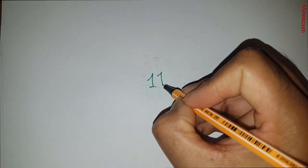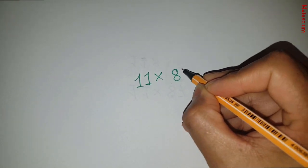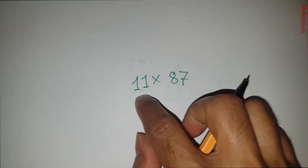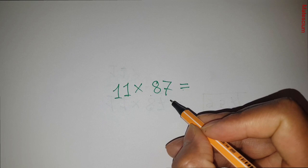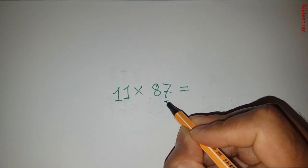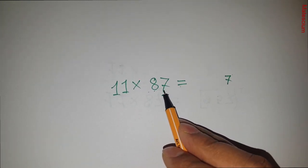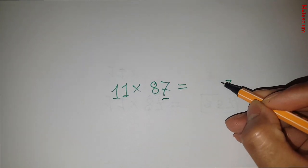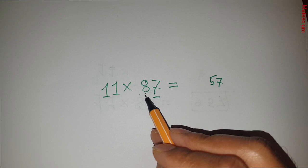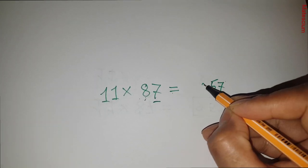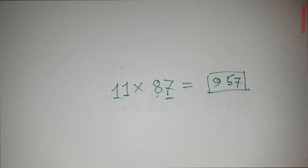Bonus: did you know you can multiply any number by 11 within 5 to 10 seconds? Take 87 times 11. Write the last digit (7) at the end. Add the two digits: 7 plus 8 is 15 — write 5 and carry 1. Add the carry to 8: 8 plus 1 is 9. The answer of 87 times 11 is 957.